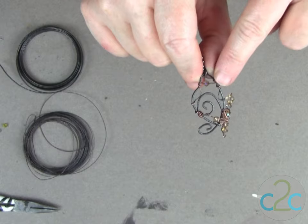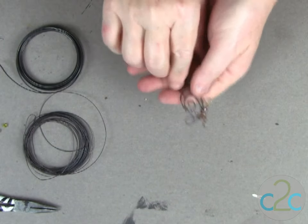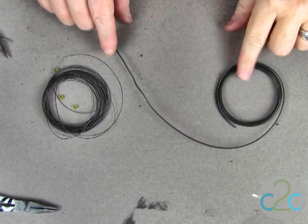This is for the flying butterfly and if you want a full butterfly then you just do this twice. So it's pretty easy to do. I have two gauges of wire.